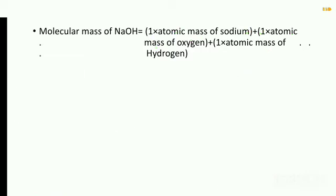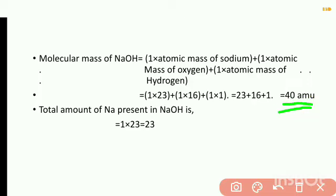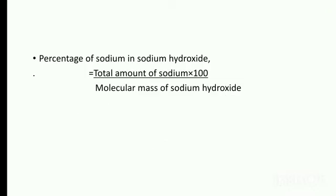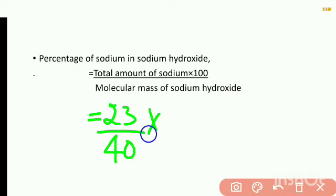We need to remember the molecular mass of sodium hydroxide is 40 and the total amount of sodium is 23. Substituting values into the formula: percentage of sodium equals 23 divided by 40, multiplied by 100.